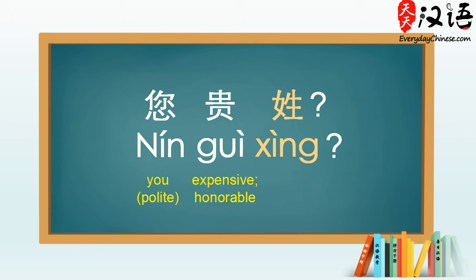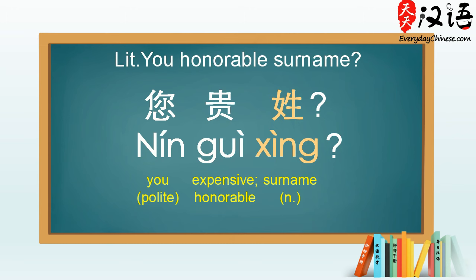The last word is 姓. 姓 is a noun which means 'surname'. So, all together, 您贵姓 literally translates to 'You Honorable Surname'.